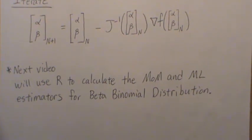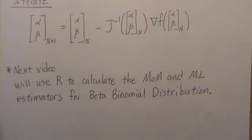In the next video we're going to use R to calculate the method of moments and the maximum likelihood estimators for a beta binomial distribution. Hope you enjoyed this — please like the video and subscribe so you don't miss the next one. Thanks, bye.